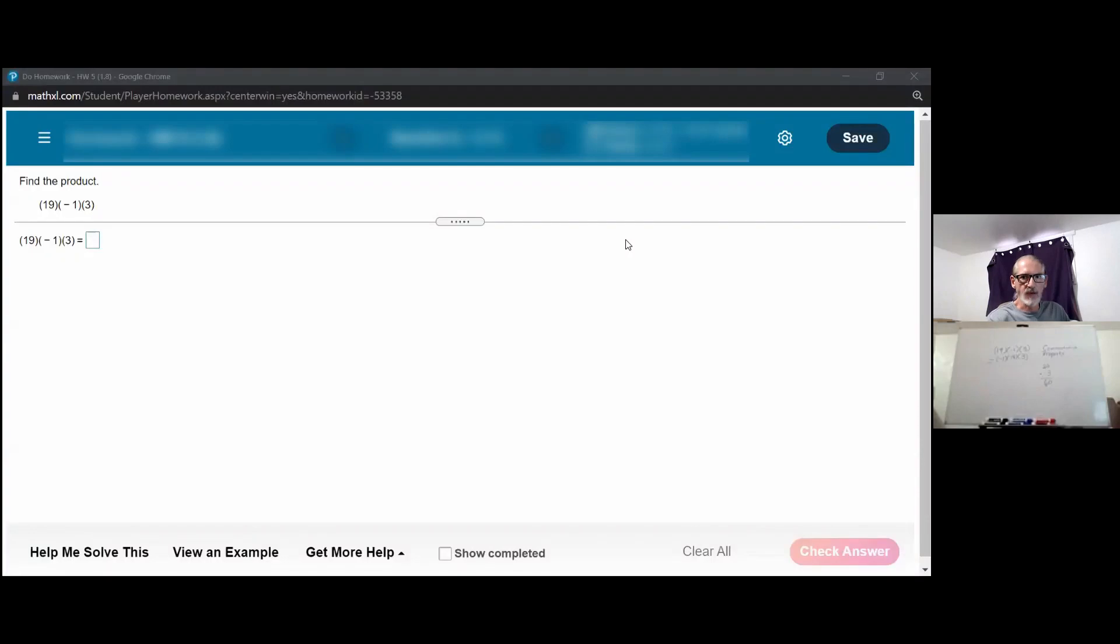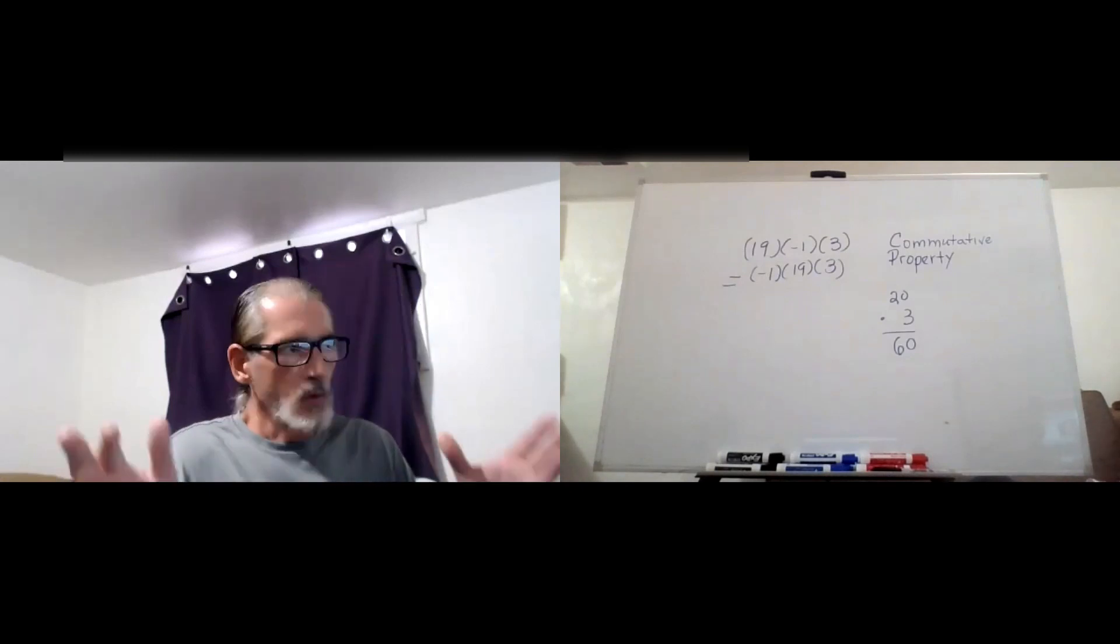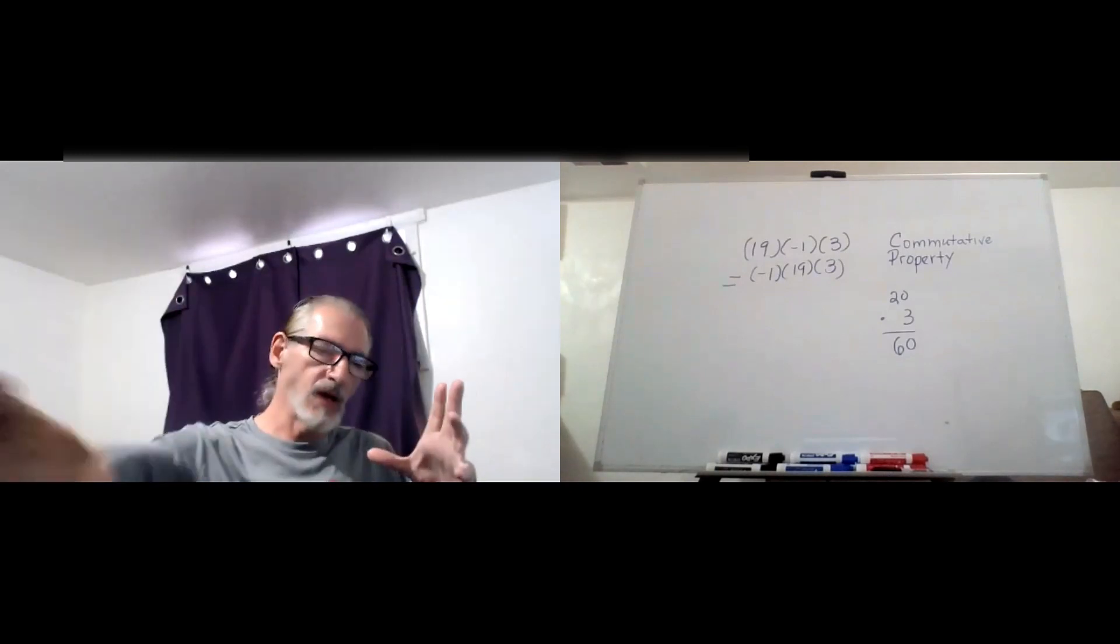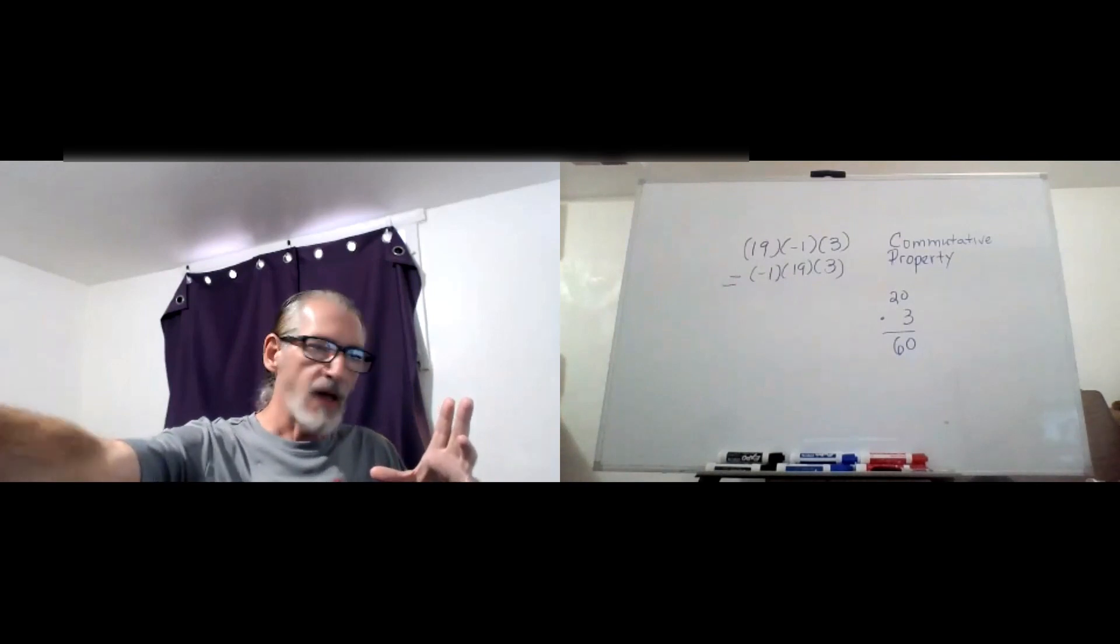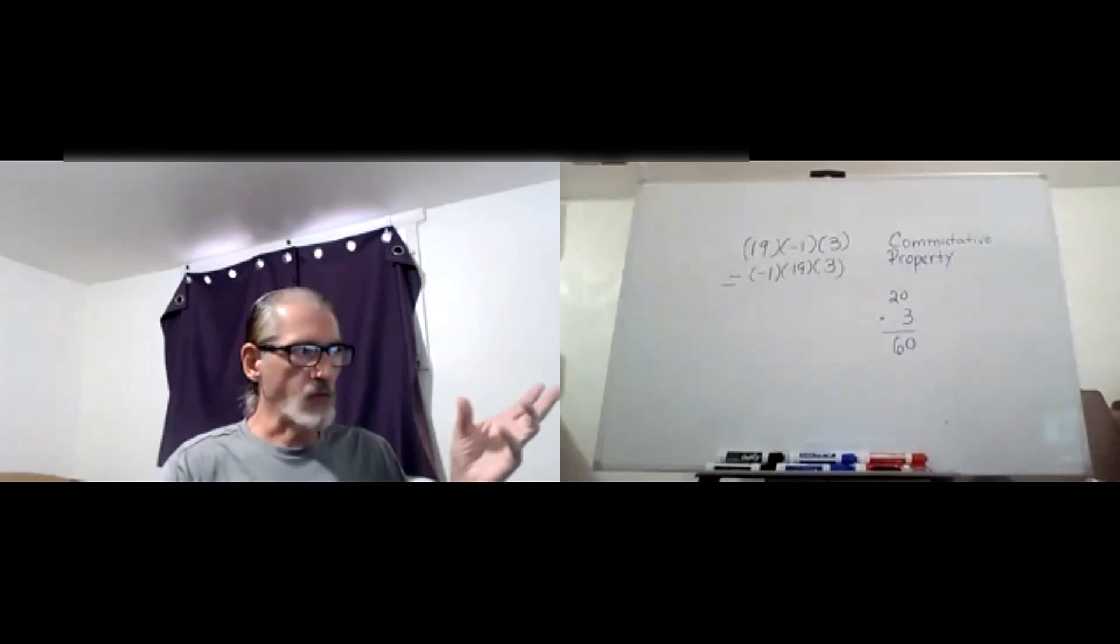Now we need to take a look at 19 times negative 1 times 3. Looking at what I have on the board here, first of all we can move the negative 1 to the front, and since it's the only negative, our overall answer is going to be negative.